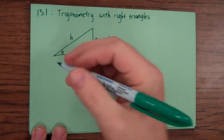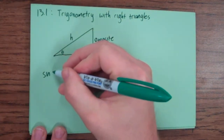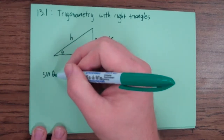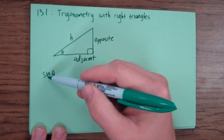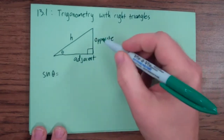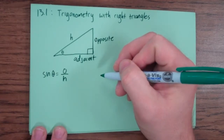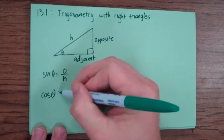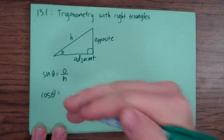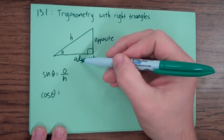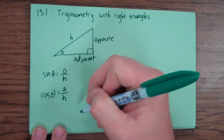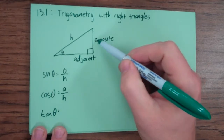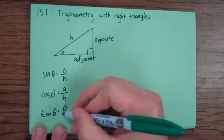Let's start with the three most common trigonometric functions. The sine of theta — you have to say 'sine of theta,' not just 'sine' — means look at the opposite side and divide it by the hypotenuse. Sine is the name of that ratio. The cosine of theta is the adjacent side over the hypotenuse. And the tangent is the opposite side divided by the adjacent side — opposite over adjacent.